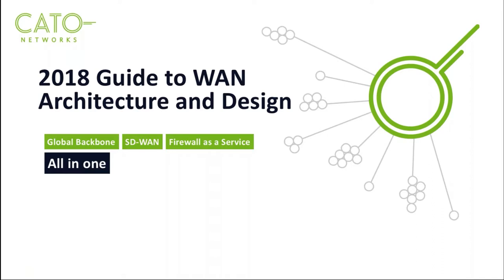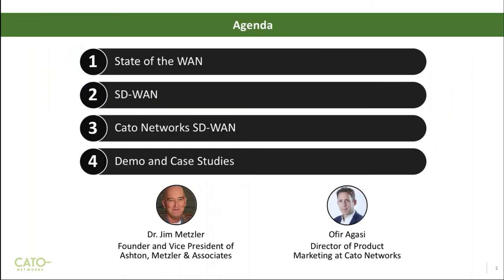It's my pleasure to introduce today's speakers: Jim Metzler, founder of Ashton Metzler & Associates, and Ophira Ghassi, director of product marketing at Cato Networks. Dr. Jim Metzler has worked in many positions in the networking industry and is now running a consulting organization. He has written for numerous publications and is a frequent speaker at conferences. Jim will talk about the state of the WAN and SD-WAN based on his findings from his 2018 Guide to WAN Architecture and Design. Ophira Ghassi has over 12 years of network security expertise in systems engineering, product management, and R&D, and will dive into Cato Networks SD-WAN with demos and case studies.